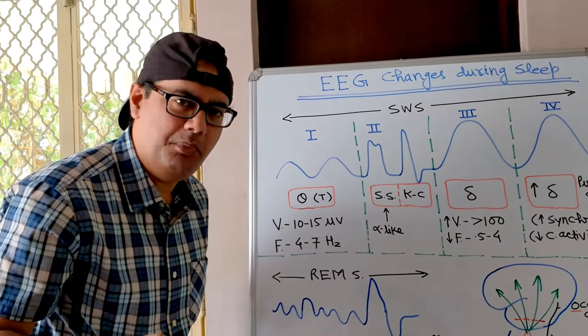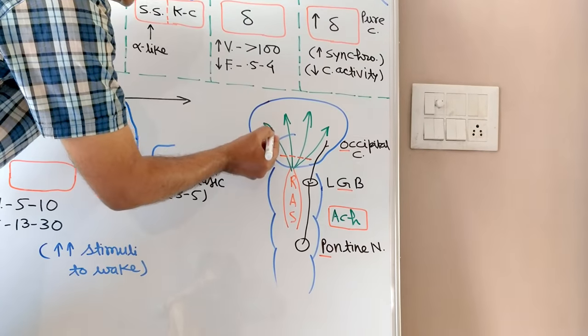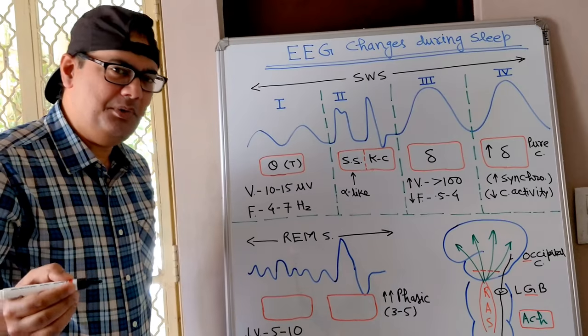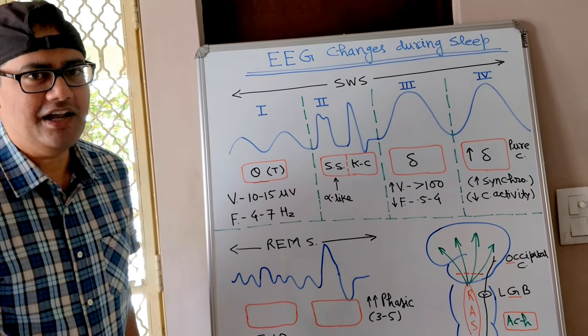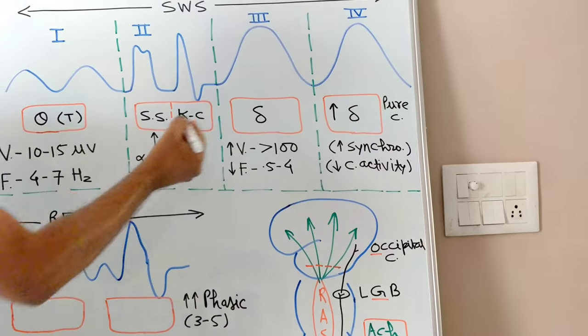only waves independent of discharges from reticular activating system to cortex. Even if RAS to cortex discharges are blocked, delta waves will be recorded but other waves will not. Quite contrasting to delta, in REM